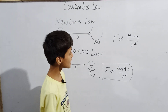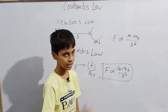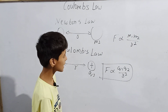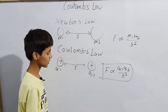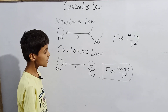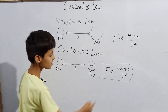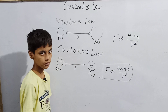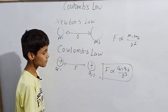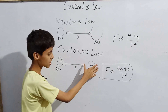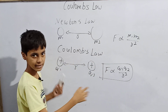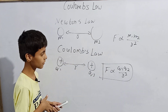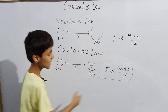We can also see Coulomb's Law in vector form, but in this video we will keep it to the scalar form. So we have F proportional to Q1×Q2 / R². The direction of the force — whether attractive or repulsive — is determined by the nature of the charges.